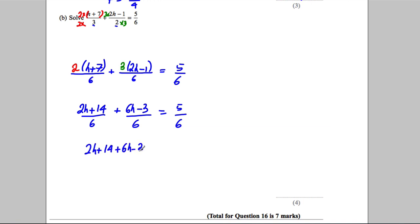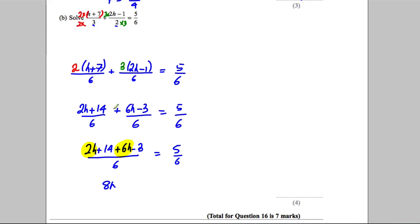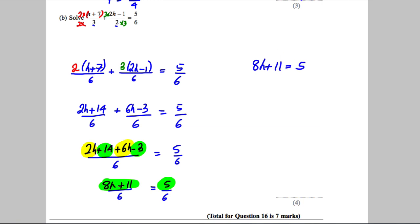Combining the algebra: 2h plus 6h gives 8h, and 14 subtract 3 gives 11, so we have 8h plus 11 over 6 equals 5 over 6. Since the denominators are the same, the only way this can be true is if the numerators are equal. So we can state that 8h plus 11 must equal 5.